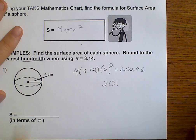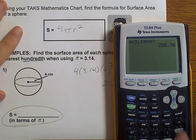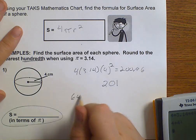But now this says in terms of pi. So, here we're going to leave the pi out of it. So, 4 times 4 squared makes 64 pi.